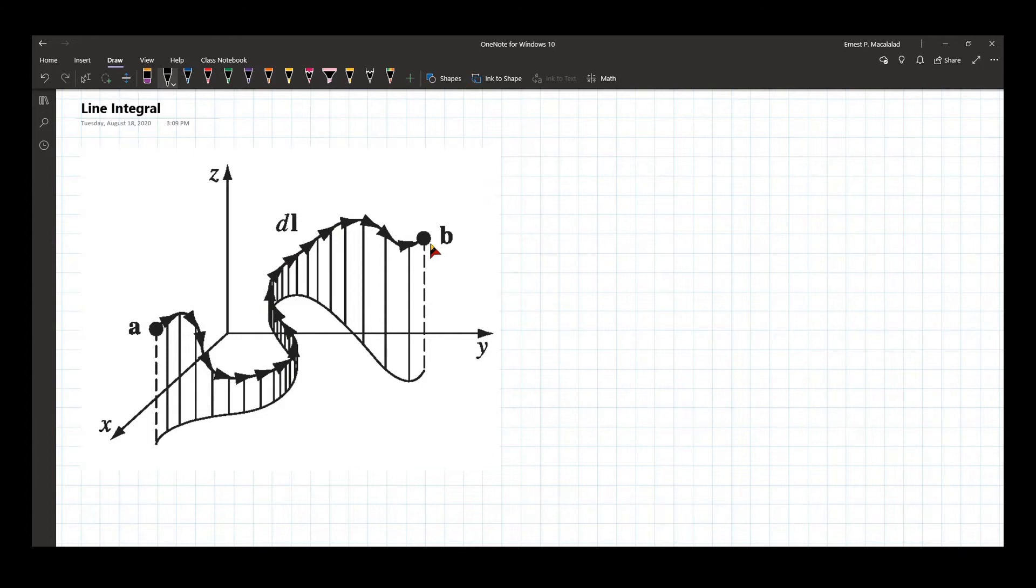In order to do a line integral, you take a vector—let's call that vector b. This is a vector function that is a function of x, y, and z. The line integral is given by the integral of the dot product between this vector function v with an infinitesimal displacement vector.